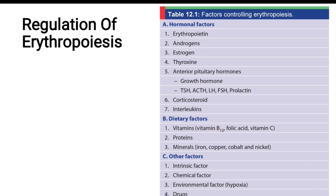To absorb vitamin B12, we require the intrinsic factor of Castle, which is secreted from the oxyntic cells of the gastric glands. Environmental factors: hypoxia — when there is reduced tissue oxygenation, increasing the erythrocytes will compensate, so hypoxia increases erythropoiesis. Drugs and chemicals: vasoconstrictors like catecholamines, nucleotides like cyclic AMP, NAD, NADP, and products of red cell destruction such as cobalt salts and thyroxine also stimulate erythropoiesis. This is the end of today's class — if you have any doubts, please put them in the comments.